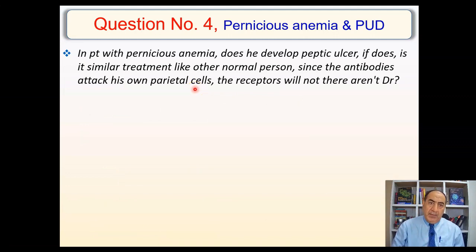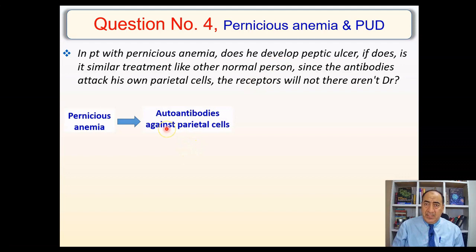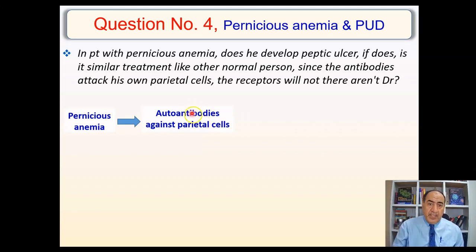Question number four: in a patient with pernicious anemia, does he develop peptic ulcer? And is the treatment similar to normal persons, since the antibodies attack his own parietal cells and the receptors won't be there? In pernicious anemia, there is production of autoantibodies — antibodies from the same person attacking tissues in the same person. They target parietal cells, which produce HCL. These cells also produce intrinsic factor, so this results in pernicious anemia due to severe deficiency of intrinsic factor.